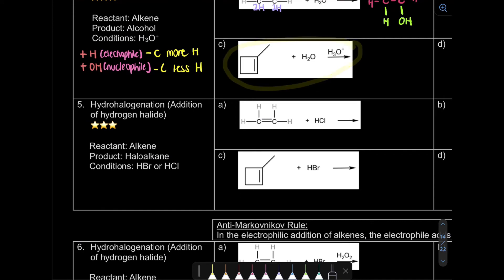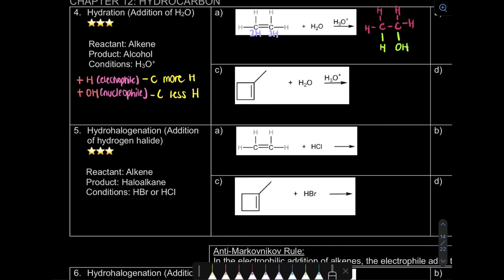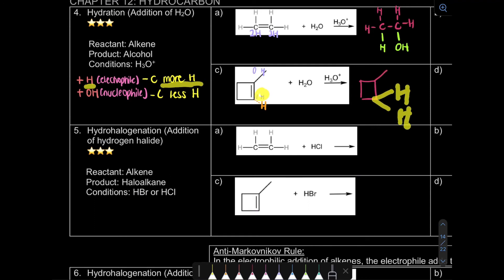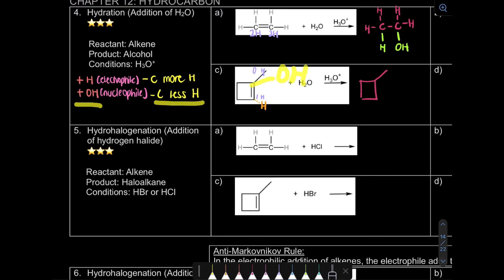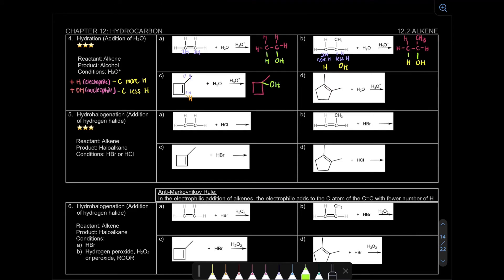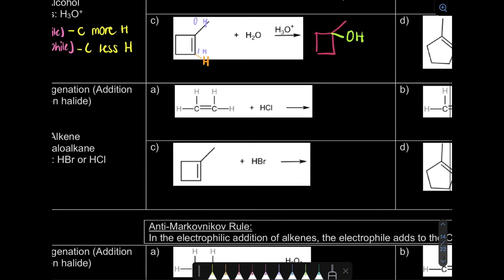For the cyclic skeletal structure example: one carbon has 4 bonds so no hydrogen attached, the other only has 3 bonds meaning it has 1 hidden carbon-hydrogen bond - so that carbon has more hydrogen. When the double bond becomes 2 single bonds, H adds to the carbon with more hydrogen. Since this is skeletal there's no need to show hydrogen, but OH must be shown attached to the carbon with less hydrogen. Try question D yourself.